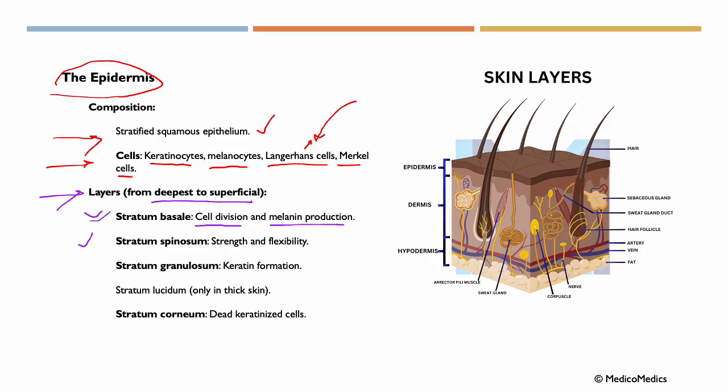Then we have the stratum spinosum. It's a layer of cells with spiny connections, providing skin strength and flexibility. Then we have the stratum granulosum. So cells begin to die here and produce keratohyalin granules, which is critical for keratin formation.